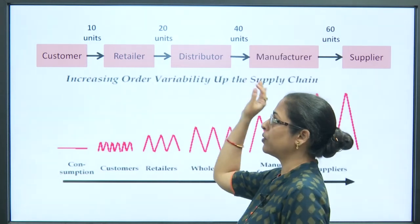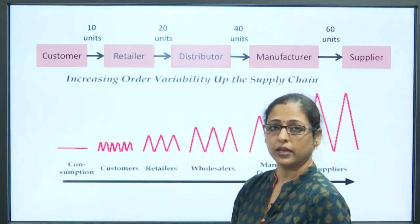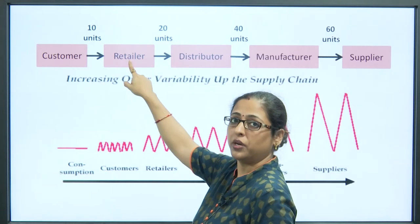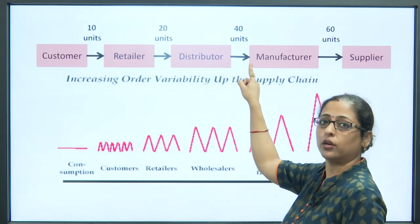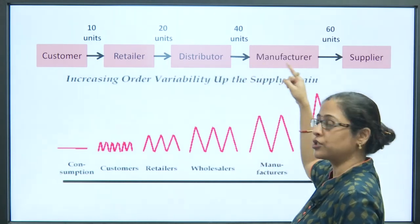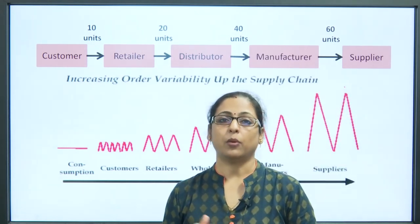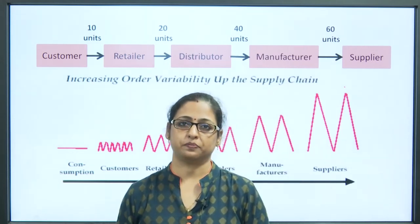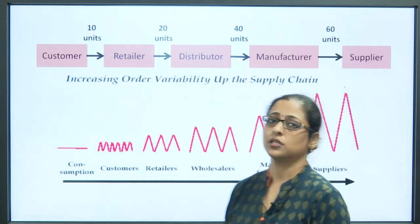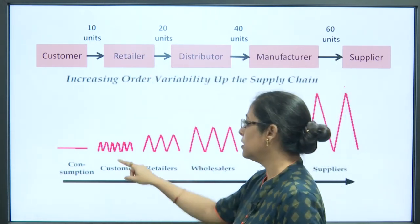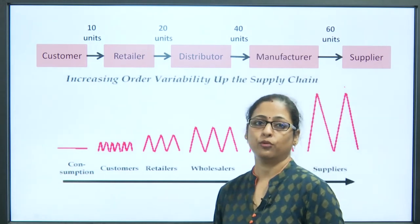What is peculiar about this is that the actual demand should have been 10 units uniformly at all levels — the customer demanded 10, so the retailer should have ordered 10 from the distributor, the distributor should have ordered 10 from the manufacturer, and the manufacturer should have ordered raw material for 10 units only. But this did not happen. The amount of order increased at every step. The actual demand was 10, yet the inflated demand became 60 units. This leads to an oscillating, increasing vibration-like effect which is called the bullwhip effect.